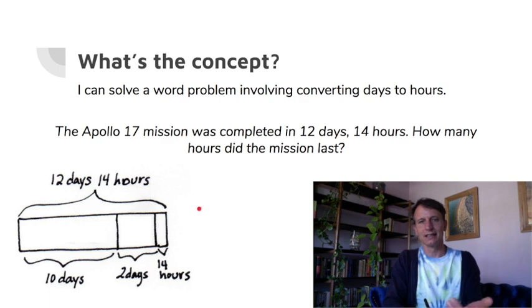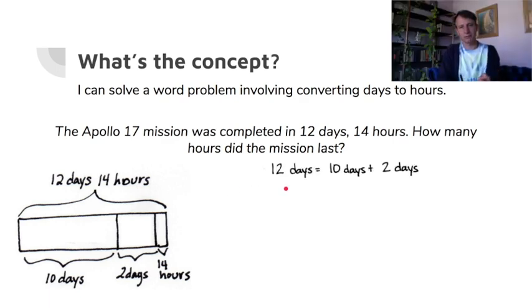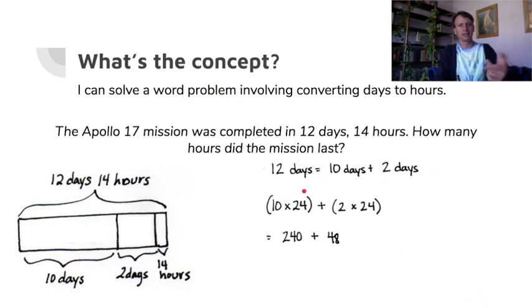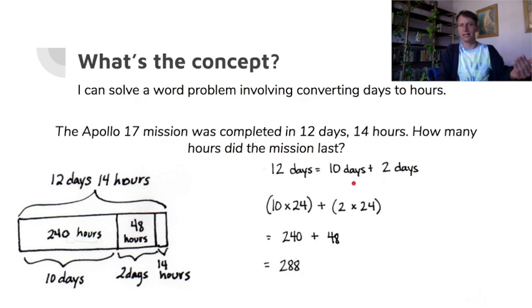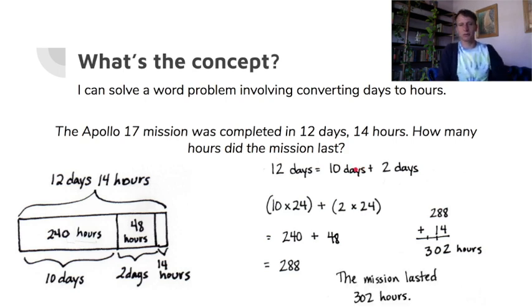Because 10 times 24 is going to be easier to do than 12 times 24—less likely to make errors, not just easier, but less likely to make errors. Because 10 times 24 is 240, 2 times 24 is 48. Put those together, you get 288. And then of course we don't want to forget the 14 hours, right? 288 plus 14 is 302 hours. Pretty straightforward, right? Much like everything else we've been doing. So you'd have your statement: the mission lasted 302 hours. And boom, just like that, we are already onto the problem set. This one was a little bit of a breather, don't you feel?